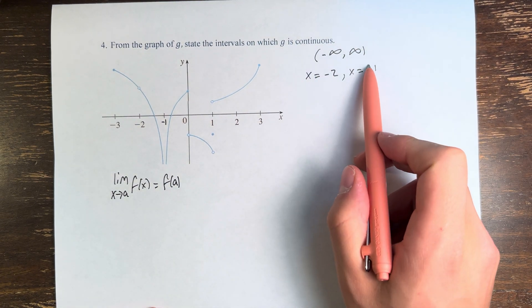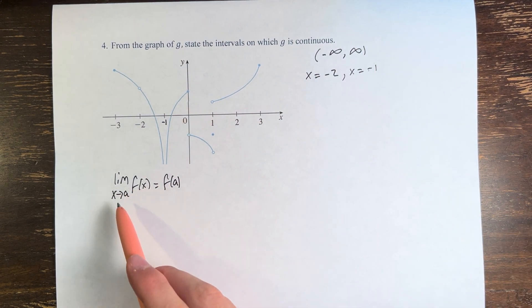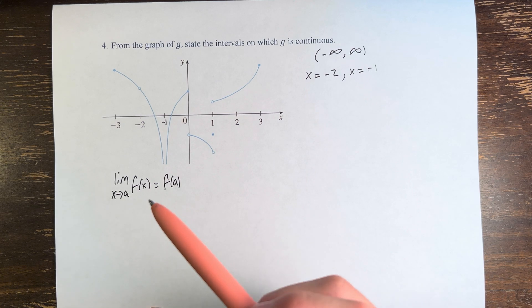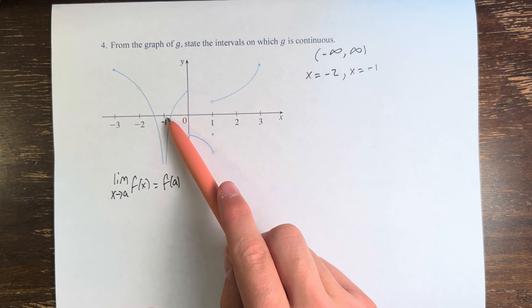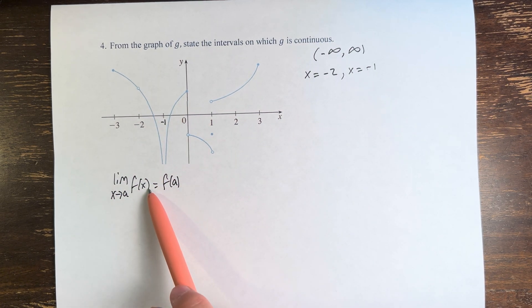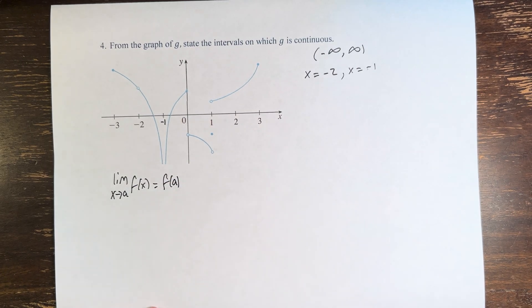So for x equals negative 2, x equals negative 1, and the points that we're going to get to, this is not true. At both of negative 2 and negative 1, not only do they not equal each other, but f of a doesn't even exist.